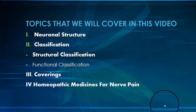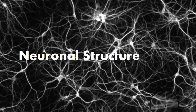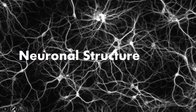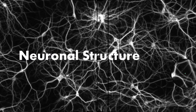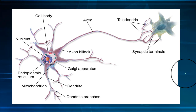The nervous system allows us to perceive, understand, and respond to our environment. It comprises two different types of cells: nerve cells, that is neurons, and glial cells. Neurons form the functional basis of the nervous system and are responsible for transmitting signals as electrical or chemical signals. Glial cells provide functional and structural support for neurons; one example is Schwann cells, which produce the lipid sheath for peripheral neurons.